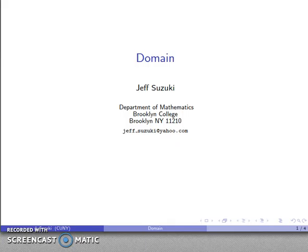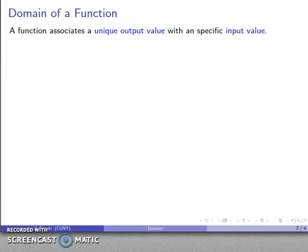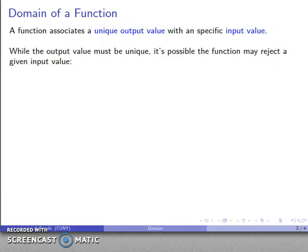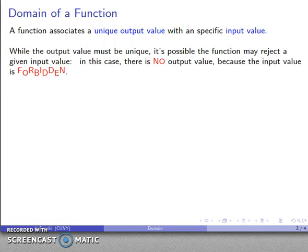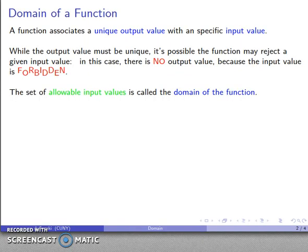One of the important questions we can ask about functions is to find their domain. Remember that what a function does is associate a unique output value with a specific input value. So given a particular value as our input, our function gives us at most one output value. The output value has to be unique, but it's possible there may be no output value at all for a particular input — because that input value may be forbidden. The set of allowable input values, the things we can substitute into our function and get some output, these are known as the domain of the function.